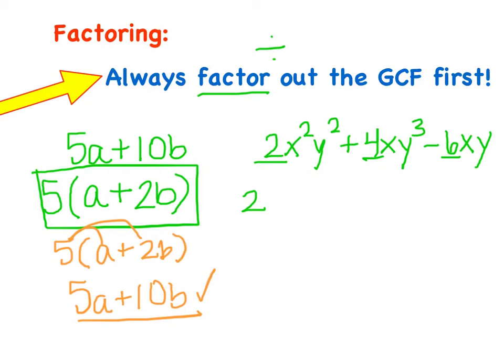Now what we need to do is look at our variables. If you notice, all three terms have an x. And so even though the first term has x squared, they all three have an x. That's part of my GCF. I could not write x squared because they don't all have an x squared. That's the C part, the common part of greatest common factor. Now we're going to look at the y values. We have a y squared, a y cubed, and just a y. What do they at least all have? They all have a y.